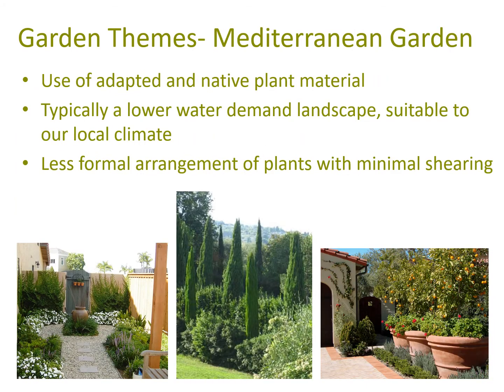Mediterranean gardens are what a lot of people think of as low water gardens in our area — with lots of examples from southern Italy and southern France, using terracotta, rock, olives, rosemary, and lavender. We see a lot of this in Southern California and it works well with our regional water cycle. These are less formal arrangements with not as much shearing as classical gardens, and they tend to have a lot of green-gray color in the plant palette.